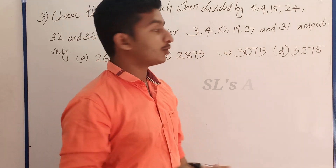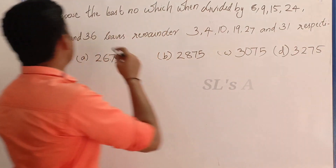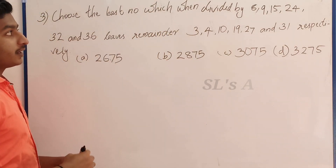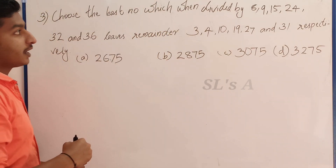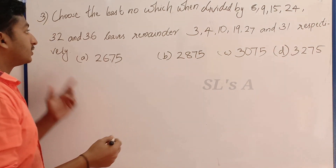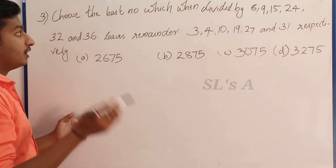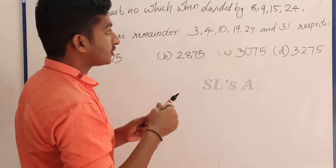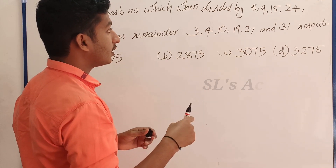The next question: choose the least number which when divided by 8, 9, 15, 24, 32, and 36 leaves remainders 3, 4, 10, 19, 27, and 31 respectively.